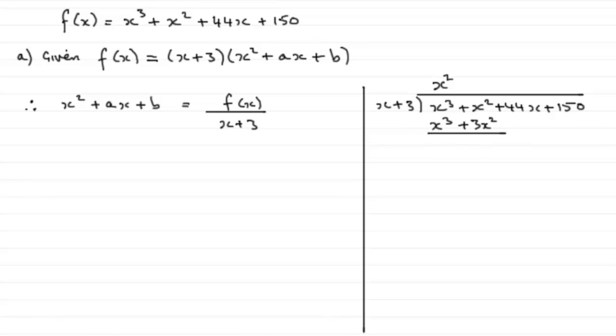Now, just subtract to work out what the remainder will be. x cubed minus x cubed, that's 0. x squared minus plus 3x squared is minus 2x squared. Bring down the next term, 44x, and start all over again.